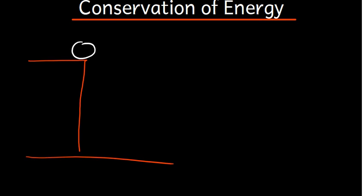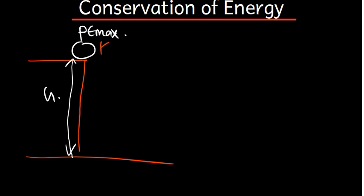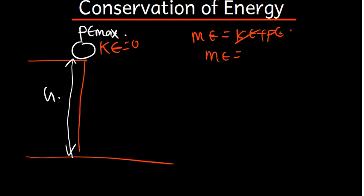At the top of the building, the object is not moving, meaning it has potential energy at its maximum position. Since it's not moving, we don't expect kinetic energy — kinetic energy is zero. We know that mechanical energy is the sum of kinetic energy plus potential energy, so at this point mechanical energy equals potential energy.